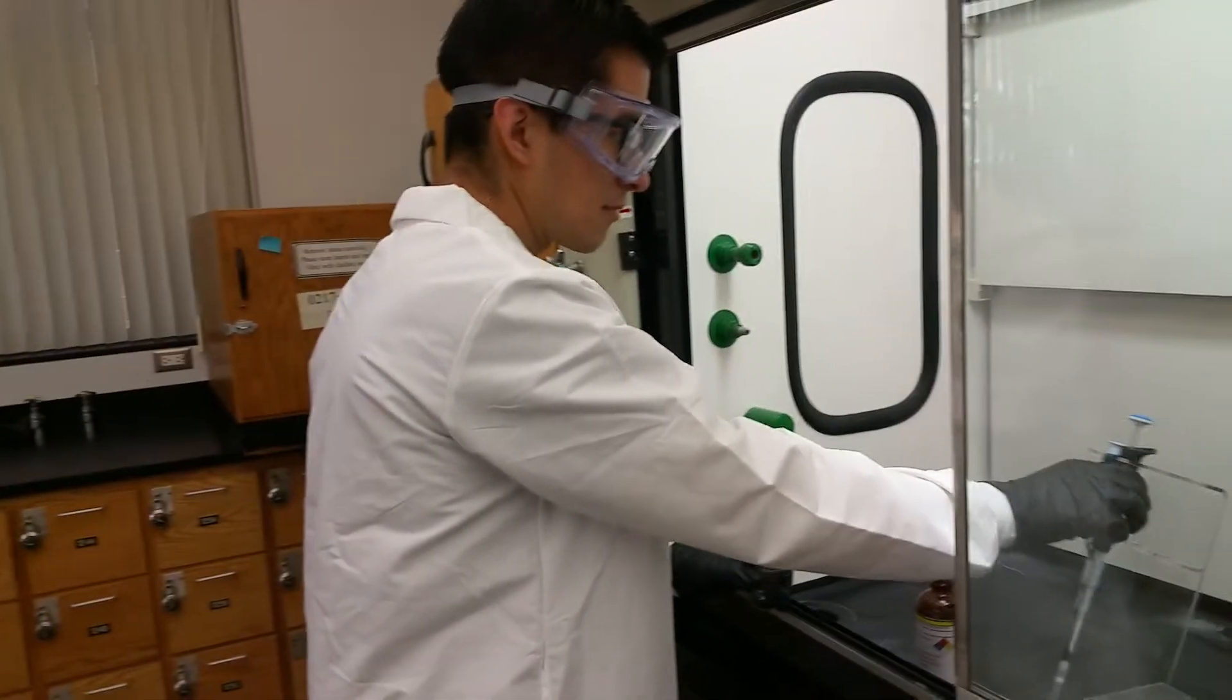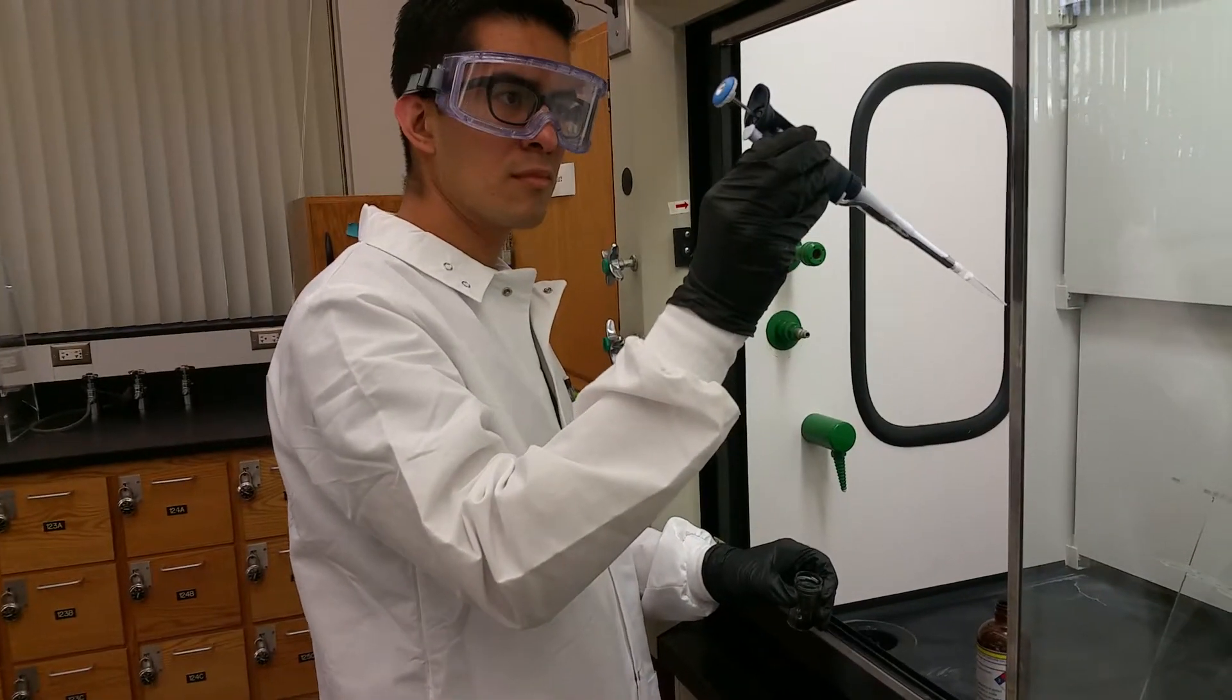Micropipetters are used to transfer very small quantities of liquid, generally less than one milliliter from one container to another when you need precise volume measurements.